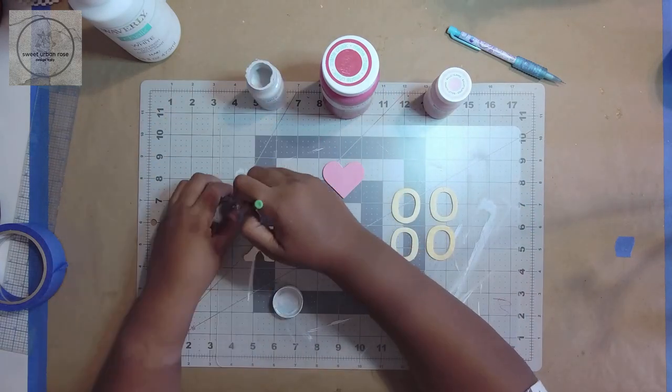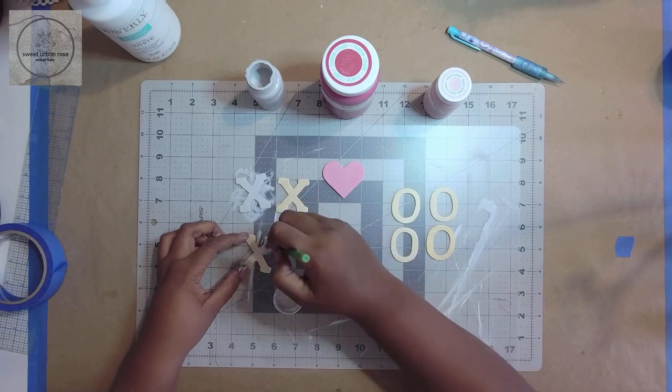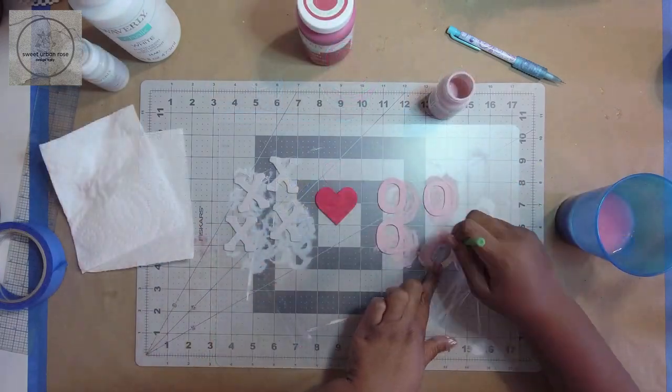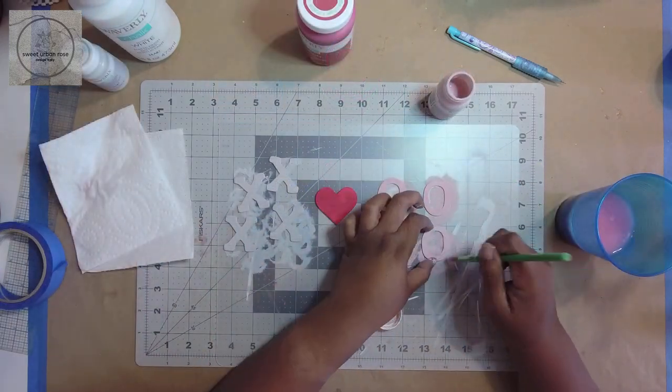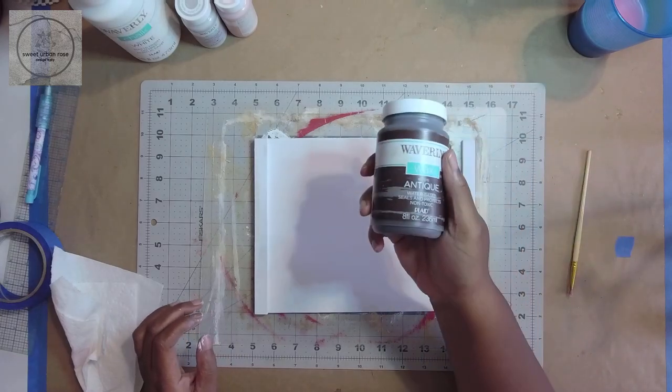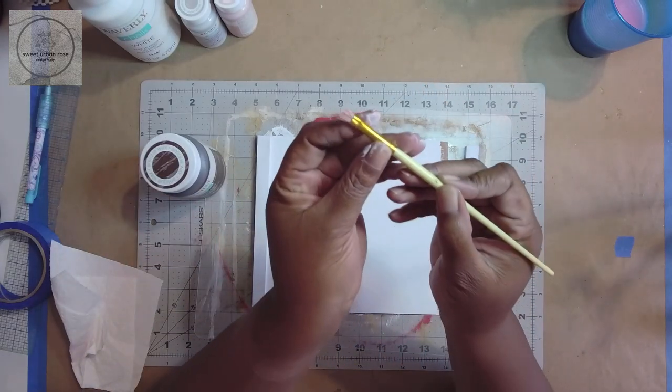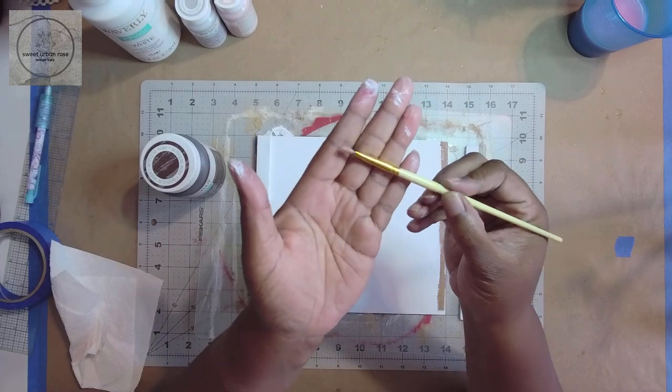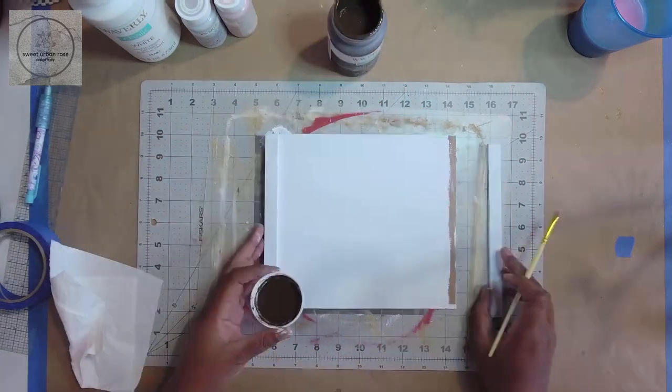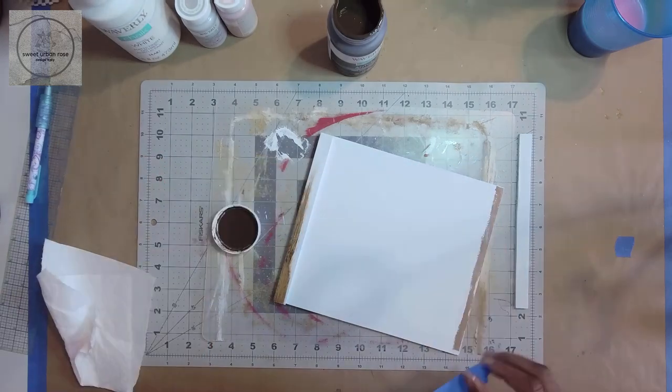As an alternative, you can also use stencils, vinyl cutouts, or stickers in place of the wooden letters. Next I used Waverly wax in antique and a small chip-like brush to give the top and bottom pieces of the sign a wood look to match the inspiration piece.